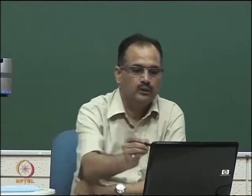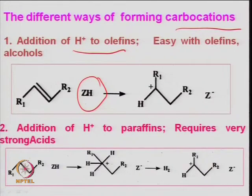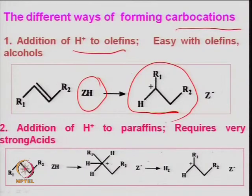Different ways to form carbocations: addition of H⁺ to olefins, which can be used in alkylation reactions for polymer gasoline. Zeolite material which has H⁺ — this reacts with olefins R₁ and R₂ — you get R₁⁺ plus H and R₂ — this is your primary carbonium ion which can then be converted into others.